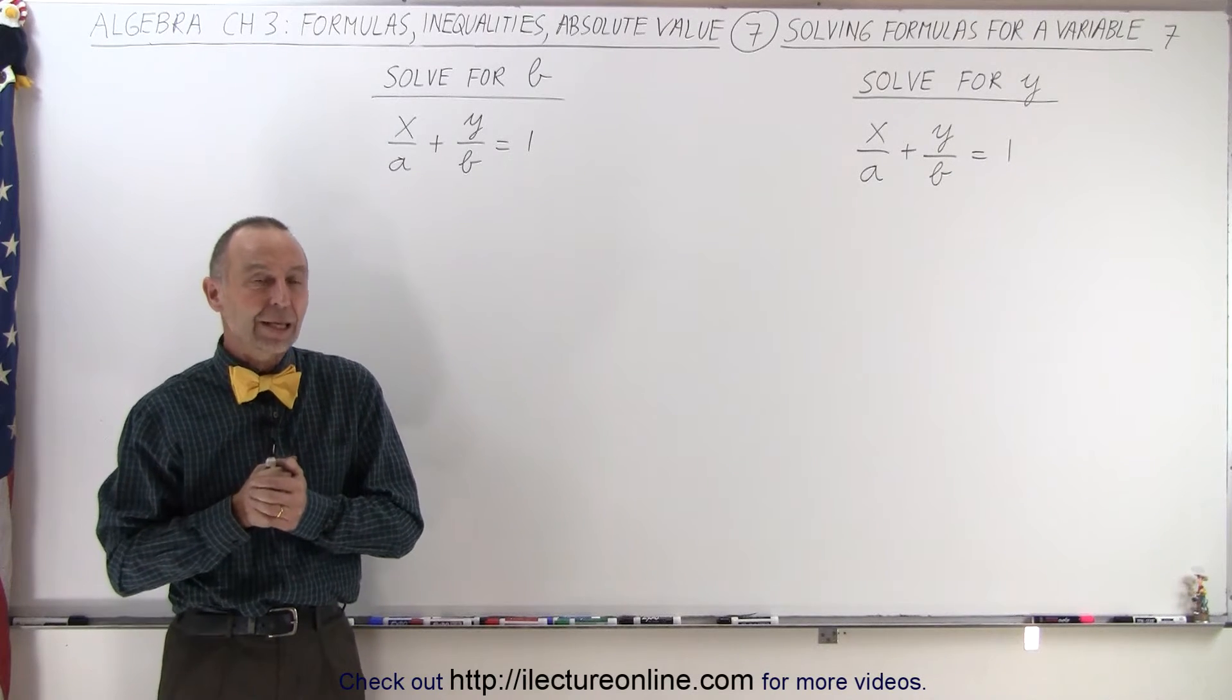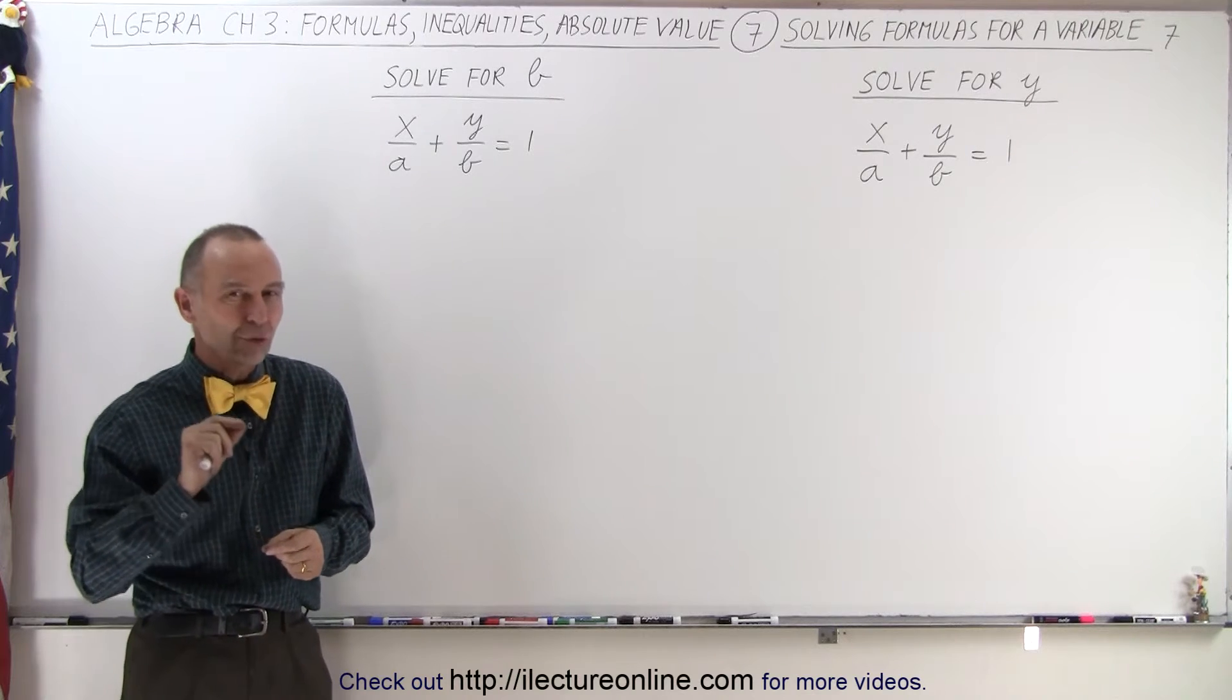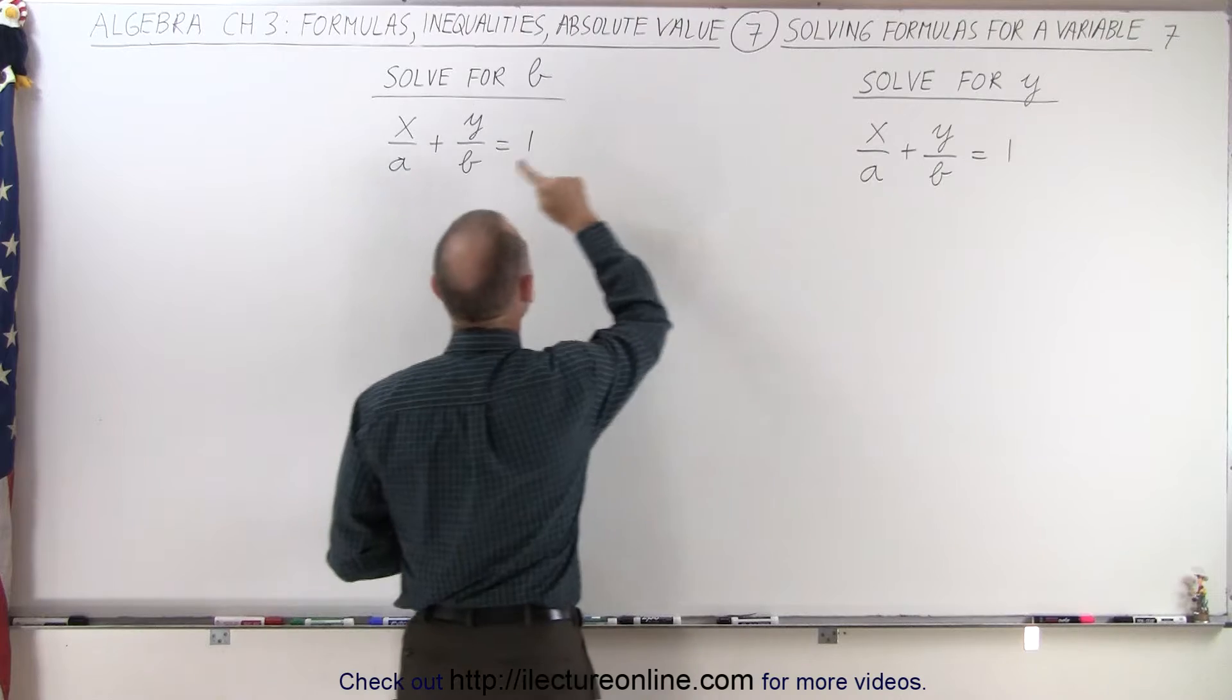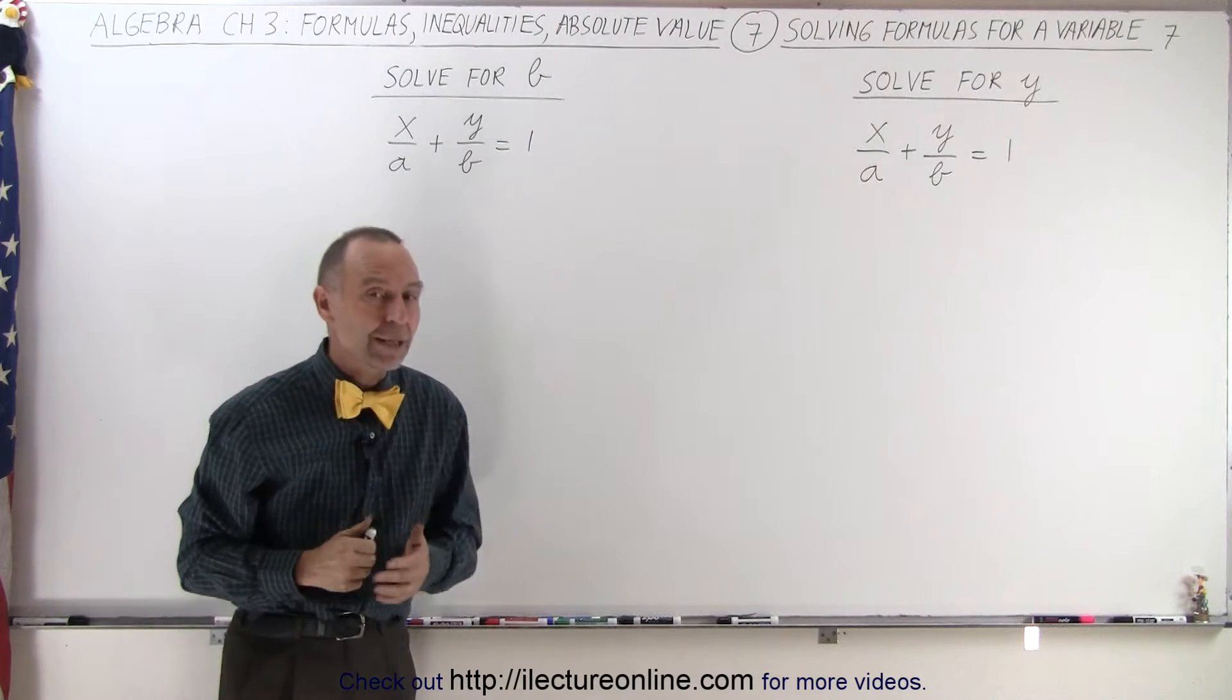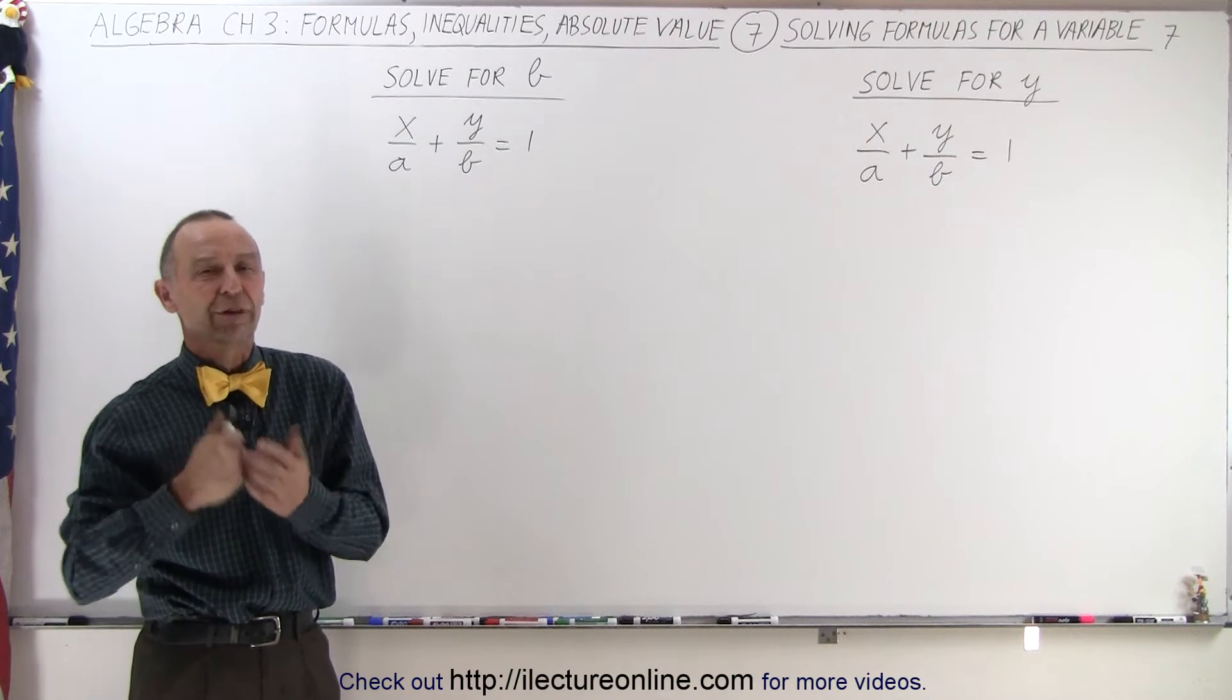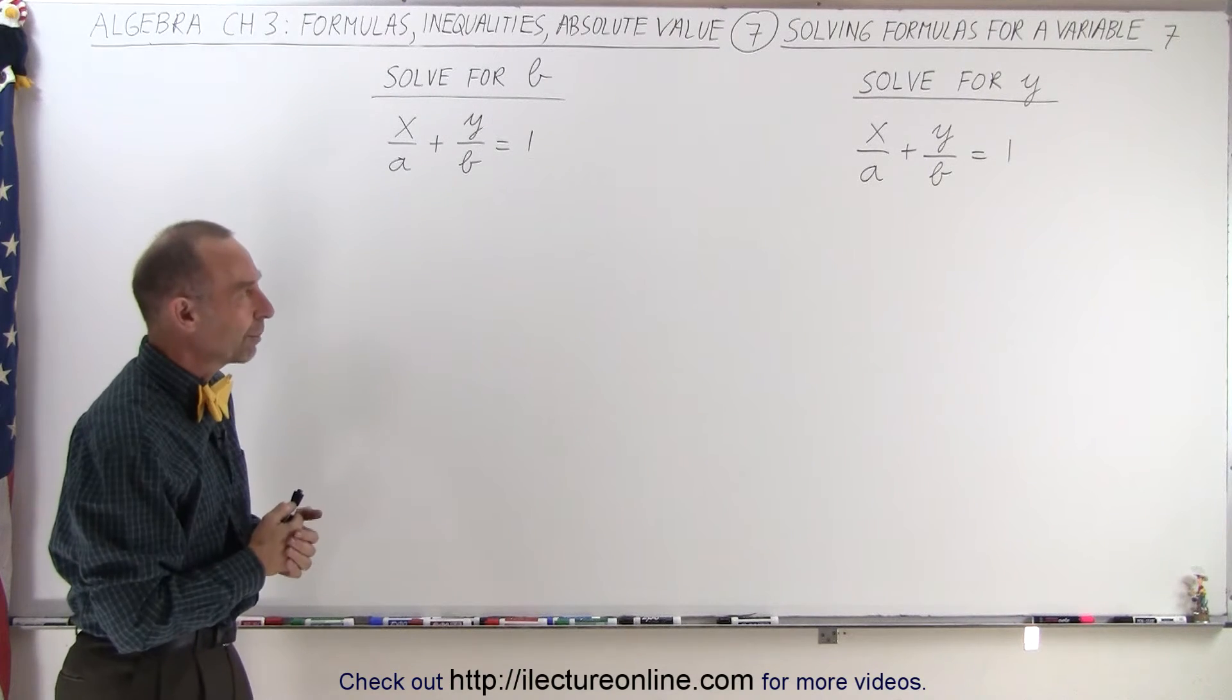Welcome to ElectronLine. Here we have the exact same problem twice because we're going to solve it in two different ways. On the right side we're going to solve it for y, on the left side we're going to solve it for b. You'll find out that the approach is pretty well the same no matter which variable you solve for, and that will become evident when we solve these two problems.